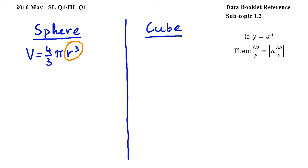Now since the diameter of the sphere is 10 plus minus 0.2 cm, its radius will be half of this, so 5 plus minus 0.1 cm. Note that we divide the absolute uncertainty by 2 as well.